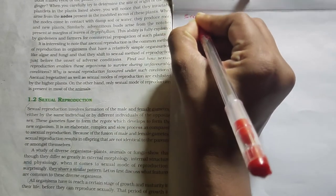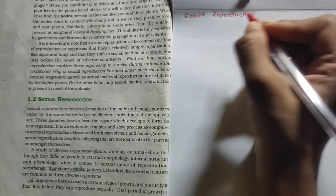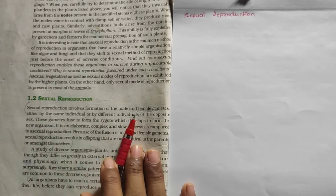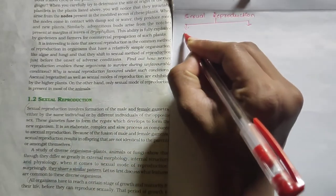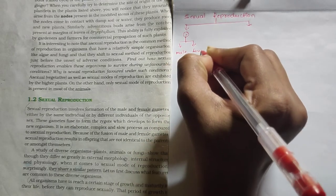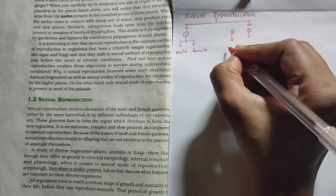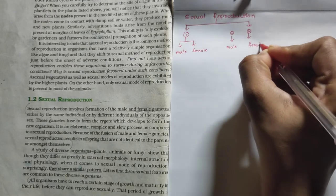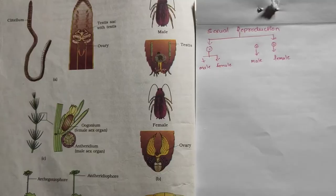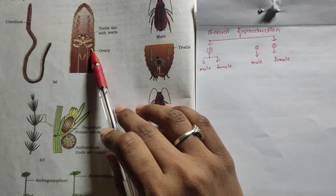Welcome to today's class on sexual reproduction. In the last class we finished asexual reproduction. Sexual reproduction involves the formation of male and female gametes either by the same individual or by different individuals. One organism can give rise to both male and female gametes, or two different organisms of different sexes can each give rise to one type. The earthworm is the best example of the same individual case.